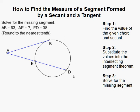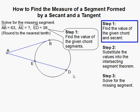How to find the measure of a segment formed by a secant and a tangent. The first thing we need to do is find the given values. We're given AB is 63.